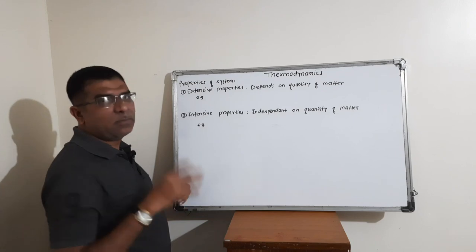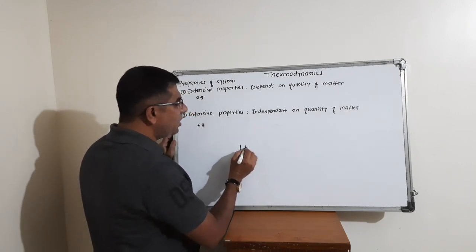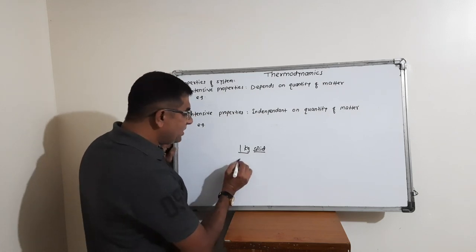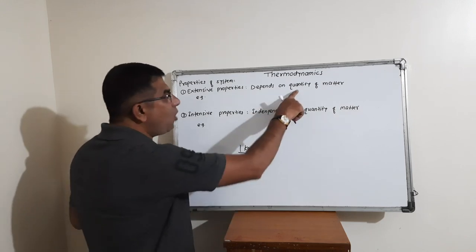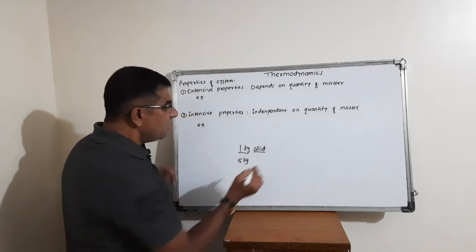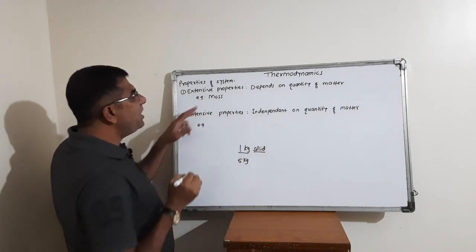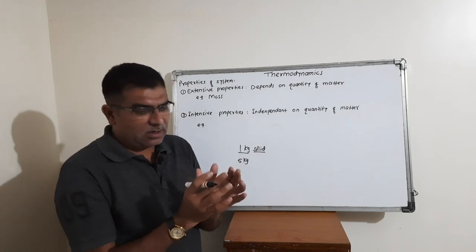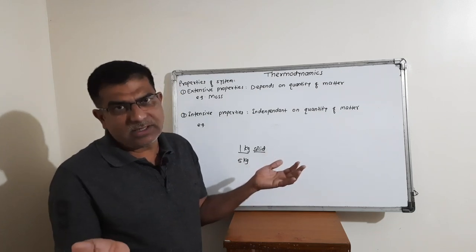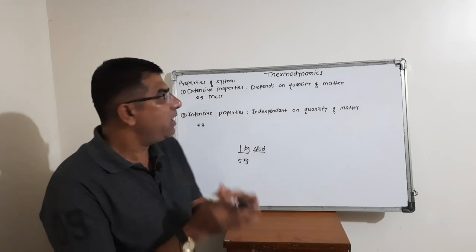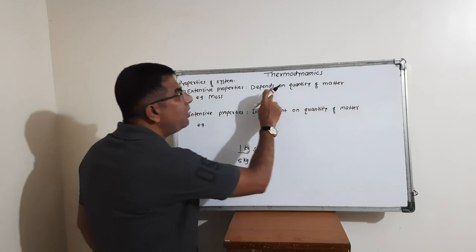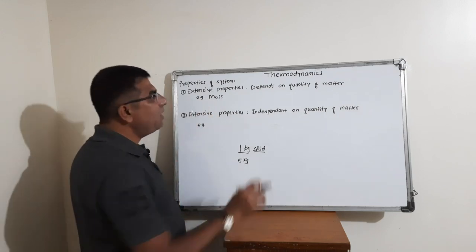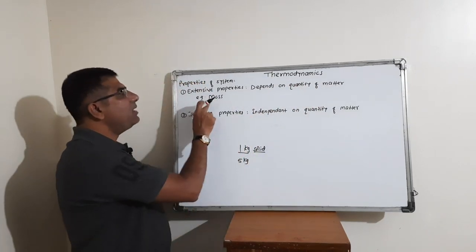For example, consider mass — it is a property which depends on quantity of matter. If the quantity can be changed, the property can be changed. The property which depends on quantity of matter is called the extensive property.